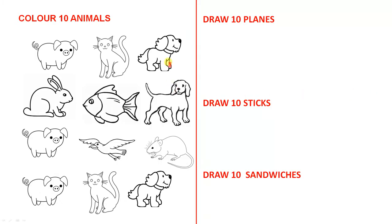We all know how students love to color in, so they would be given plenty of opportunities. Here is an example where they color 10 animals. You can pick any objects you want. Students definitely love to draw, so here is an opportunity for them to do that. They can draw 10 planes, 10 sticks, 10 sandwiches, or anything else. You can pick whatever objects you want. Just give them plenty of opportunities.